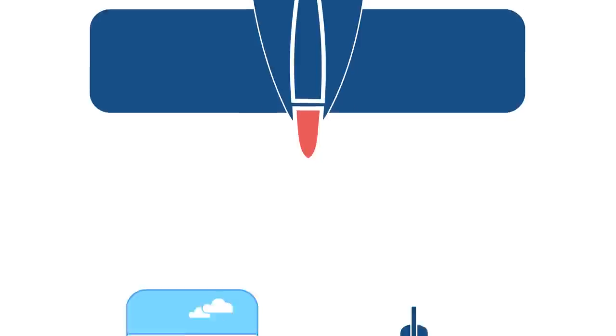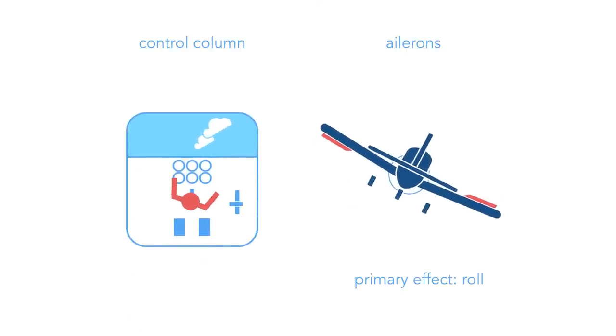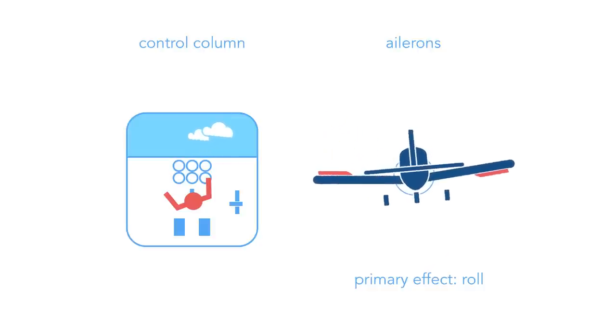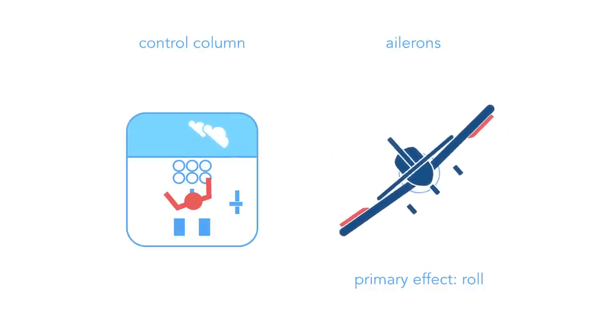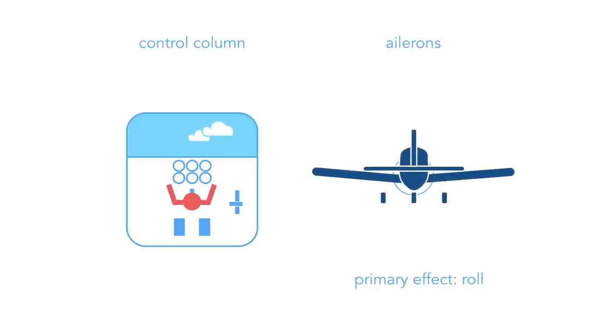The ailerons function in opposition. As one moves up, the other moves down. The pilot uses the control column to operate the ailerons by turning it right or left. The primary effect is a roll about the aircraft center of gravity.